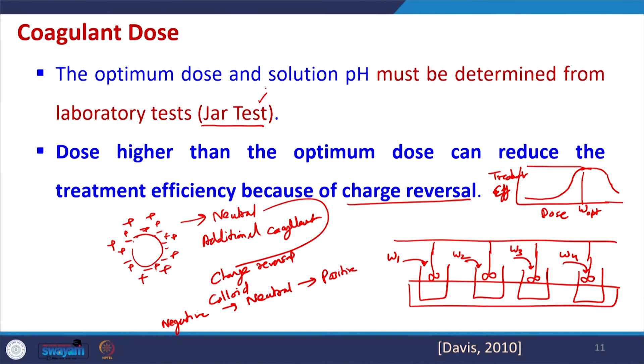It is very important to perform the jar test regularly and find out the optimum dose. Similarly, we can vary the pH, add the coagulants, and cross-check which pH is good for this particular water. Both the optimum dose and solution pH may be optimized using the jar test. Solution pH is important but we generally select coagulants based on solution pH, since we cannot change the pH of a huge quantity of water, though sometimes mixing streams can change pH.